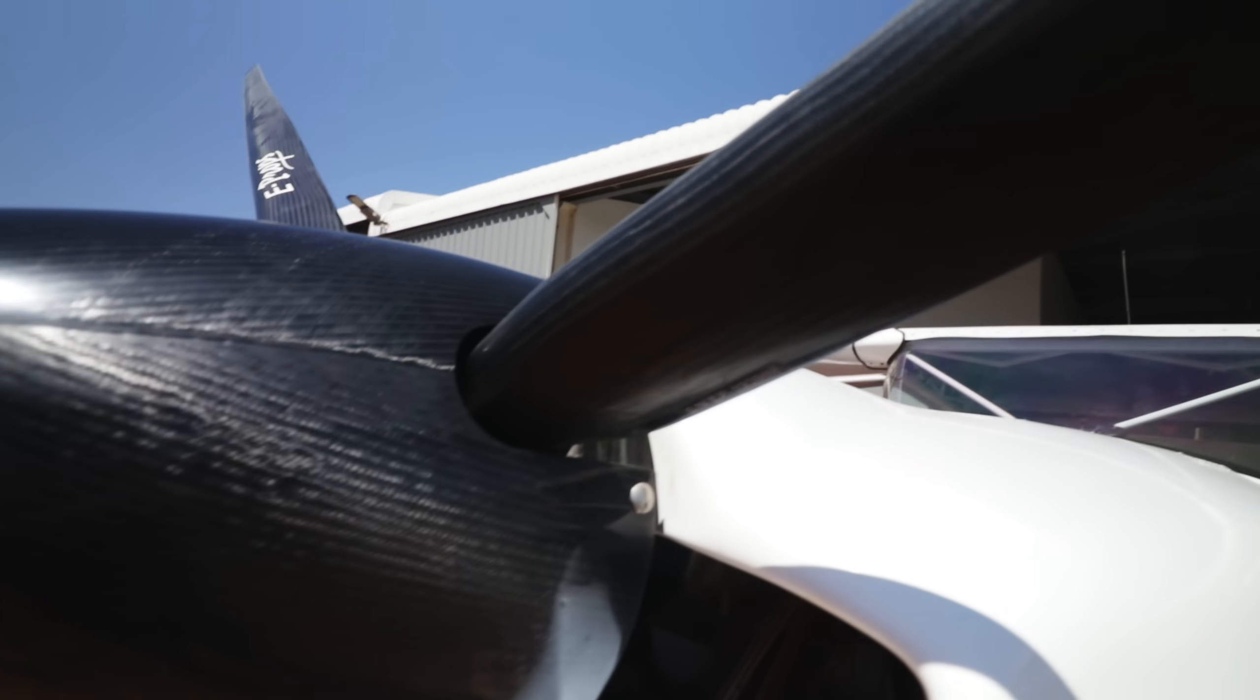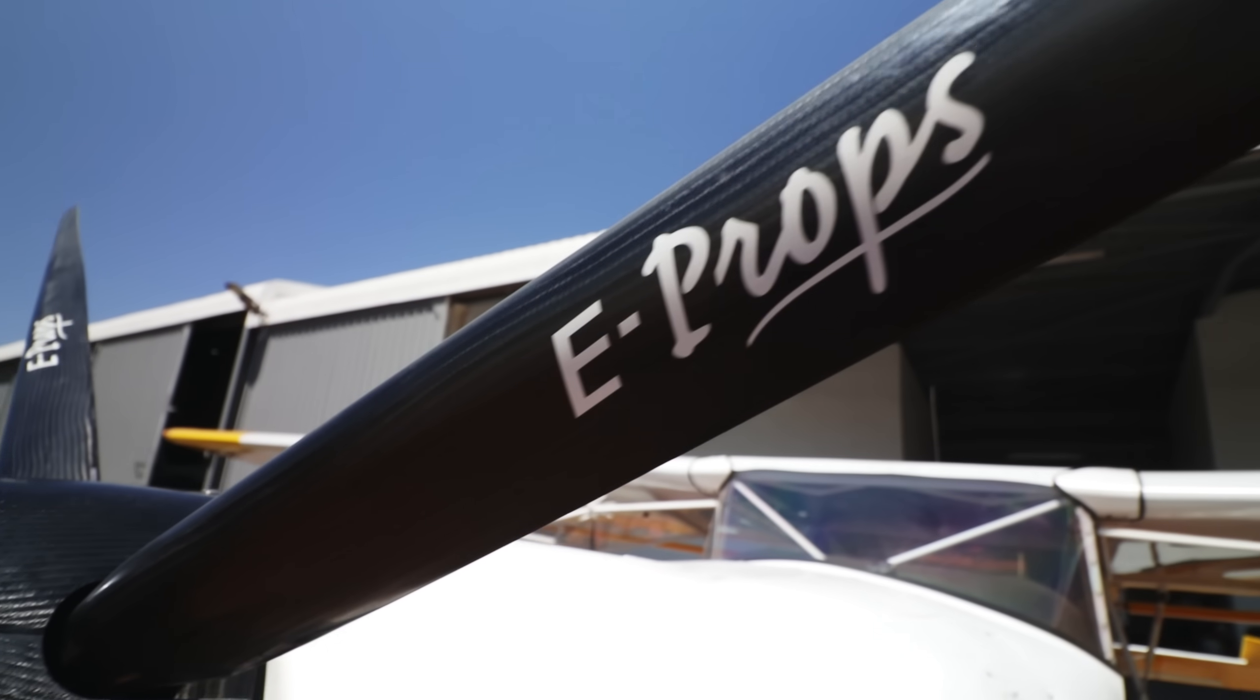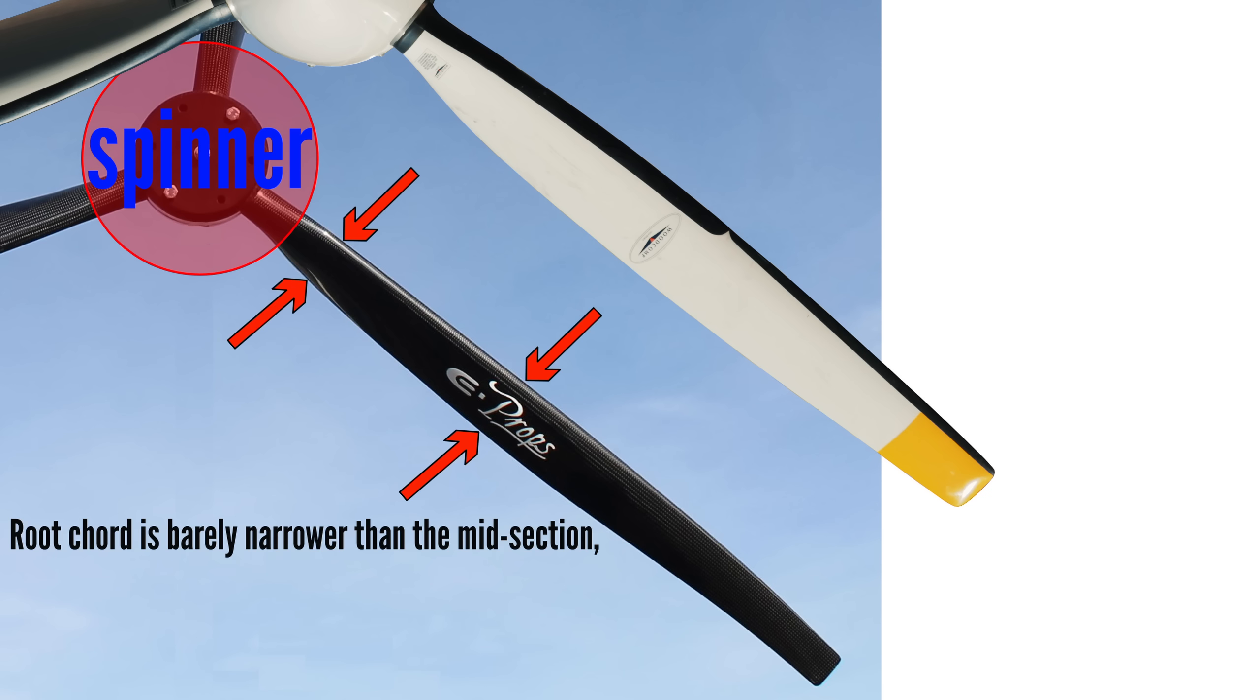So on typical propellers, it's an acceptable trade-off to keep the root chord narrower. However, because E-PROPS are made from lightweight materials, they can afford a relatively wide root chord. The drag penalty is also minimal, because while the root chord is wide in comparison to the median chord, it's still relatively thin when compared to other propellers.